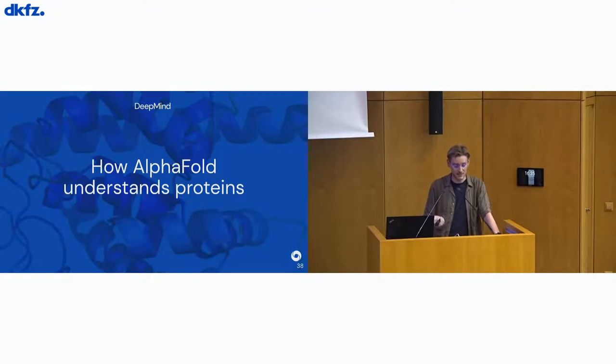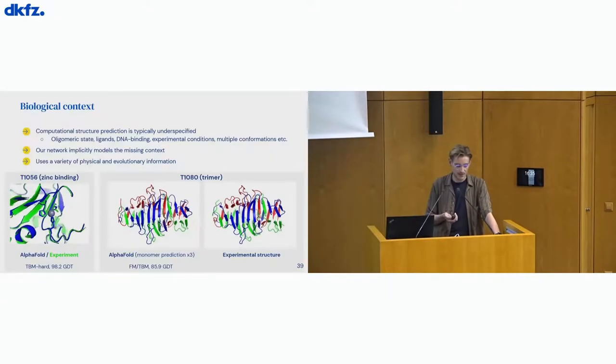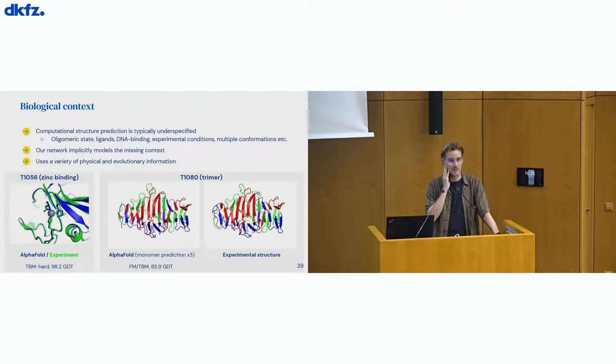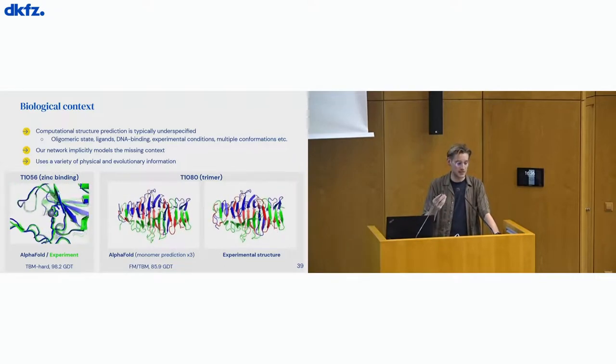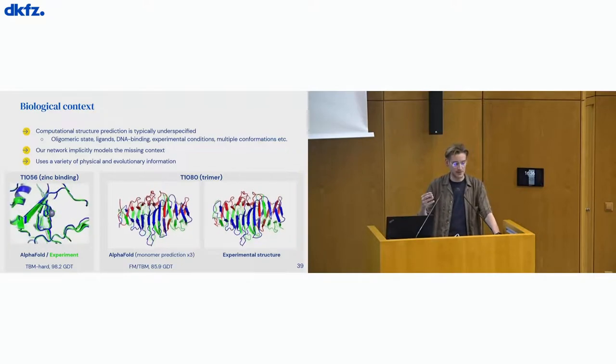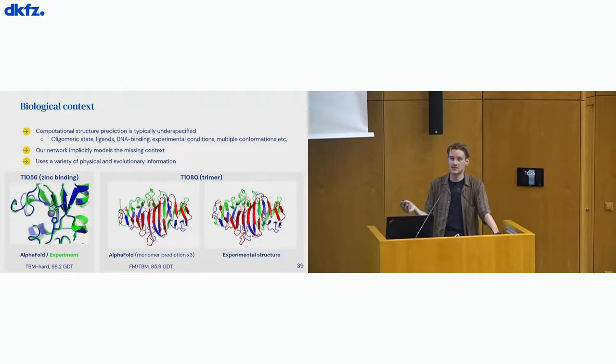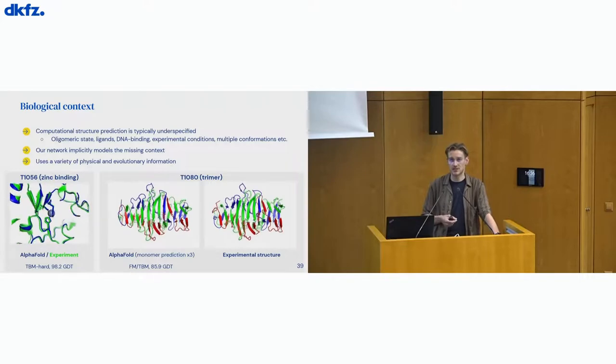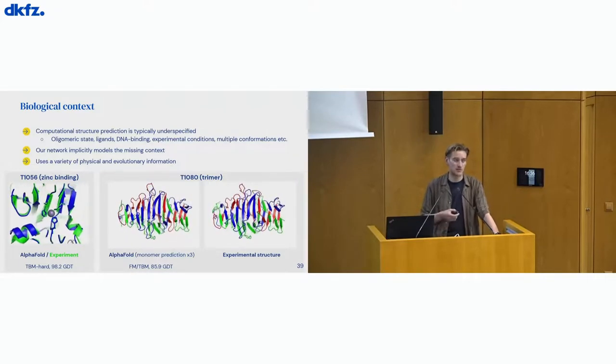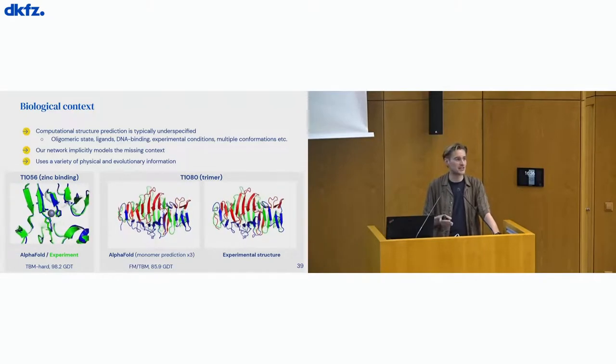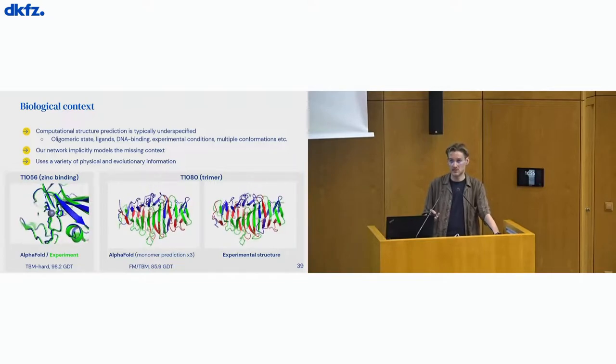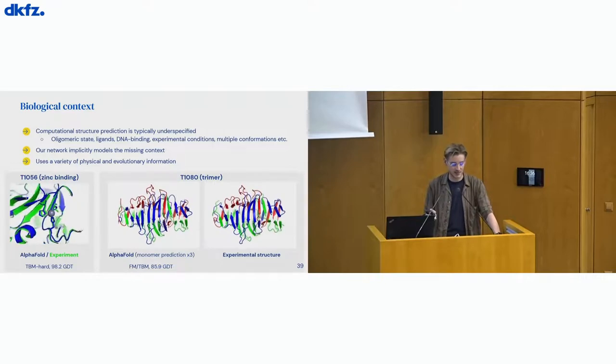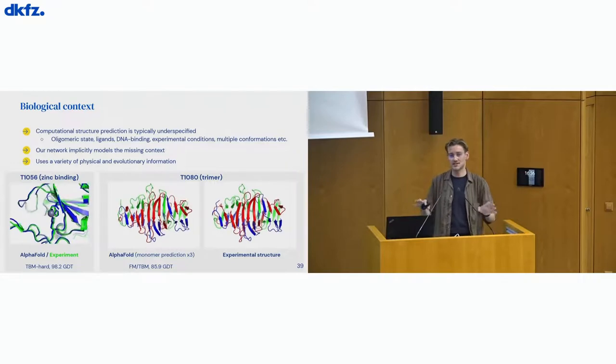All right, so that was the network architecture and with this I'd like to move on to sort of talking about how AlphaFold seems to understand proteins. So one interesting piece to highlight is that protein structure prediction is typically underspecified. That's because proteins take on their structure not in isolation but sort of given all the context that's around them. The waters, small molecule ligands that might bind to it, sugars, DNA pieces that might bind to it or also just the experimental conditions like temperature, pH, all these kind of things. So in that sense protein structure prediction is underspecified because the network is not told what sort of context it should be using to make its current prediction. And for that reason our network seems to implicitly model this missing context simply by virtue of being forced to do that on the training sets.